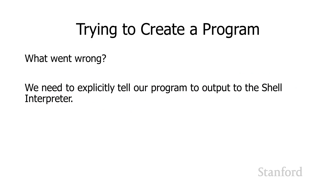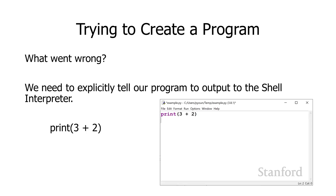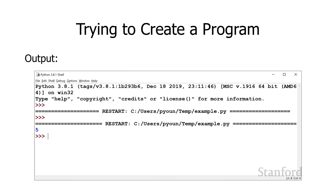In our Python programs, we need to explicitly tell Python that we want to output to our shell interpreter. We can do that with what's called a print function. I'm going to say print, then I have a pair of parentheses, and between the parentheses I say what I want it to print. In this case, I want it to print 3 plus 2, so I say print(3 + 2). And now if I run it, sure enough, you can see that it is printing a 5. So this is doing what we want.